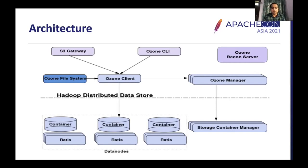We also have an S3 gateway interface which understands the S3 protocol, so all S3-based applications can talk to Ozone through the S3 gateway. And we have the Ozone Recon service, which is a management service for Apache Ozone. It reconciles all the data and events triggered in the cluster over time and gives a full view of the entire Ozone cluster.